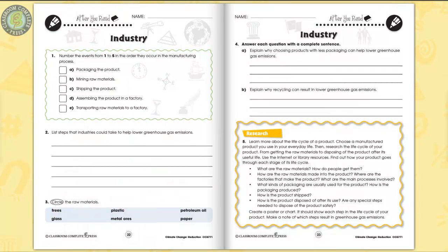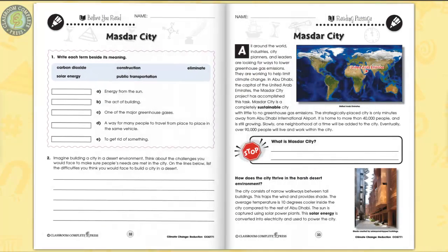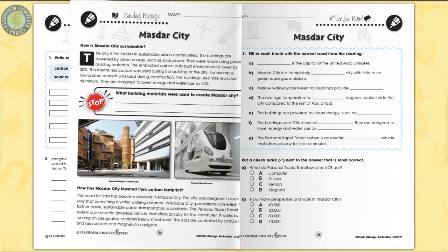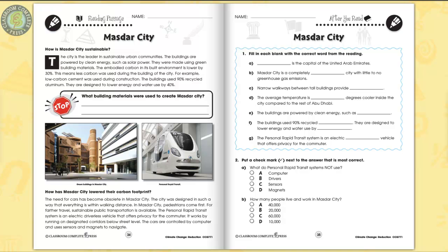Find out about product life cycles and what industries can do to lower their emissions. The reading passage is where you'll find all the curriculum content. See what other countries are doing to create communities free of carbon dioxide emissions and waste.